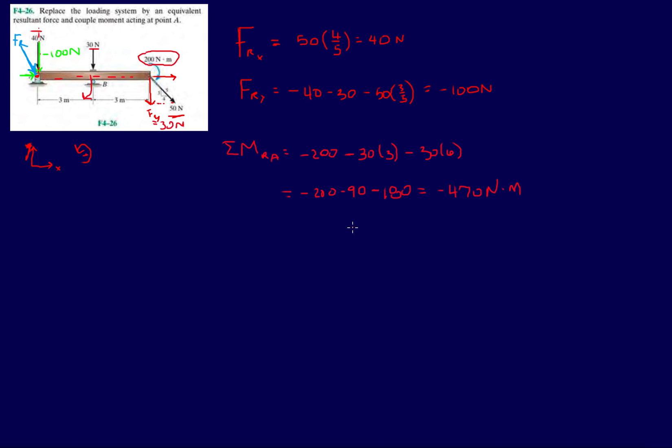This is going to be minus 470 Newton-meters. Or if we've done it in the past, 470 Newton-meters in this direction, clockwise. That's MRa. And now one more thing we have to do is find the angle that the resultant makes. So that's going to be inverse tan.